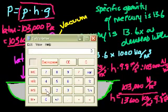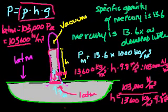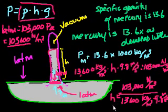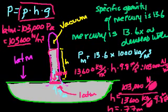Now let's just do the math. So 103,000 divided by 13,600 divided by 9.8 equals 0.77. And we were dealing all with Newtons. So height is equal to 0.77 meters. And you should see that the units actually work out. Because we have meters cubed in the denominator up here. We have meters cubed in the denominator down here. And then we have kilogram meters per second squared here. And then we have Newtons up here.